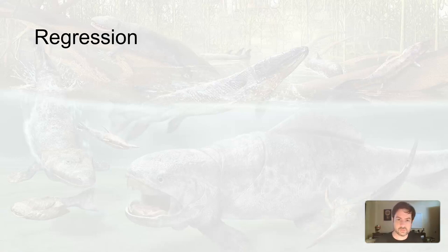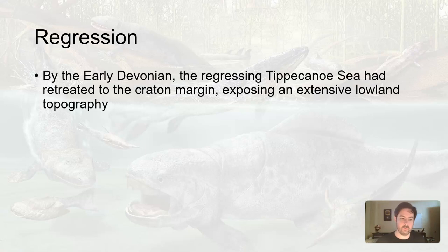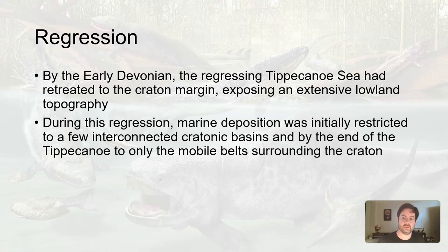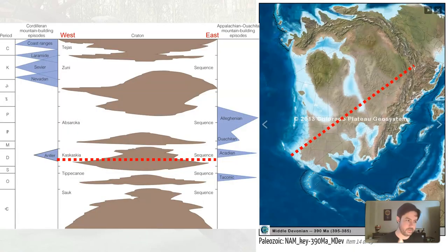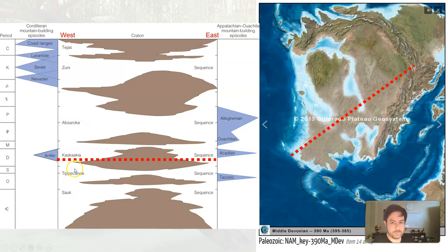So the Tippecanoe: oceans came in, oceans left, regressions. We're exposing the land, so we're going to get more weathering and erosion and another unconformity. We have the Sauk and Tippecanoe — transgression, regression, transgression, regression — and we get this material deposited and sediment that eventually becomes sedimentary rock.